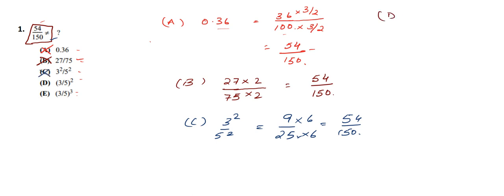Now let us check option D. In option D we have (3 by 5) whole squared, which is also equal to 9 by 25. Multiplying numerator and denominator by 6 we get 54 by 150. Hence option D is also not the correct answer.